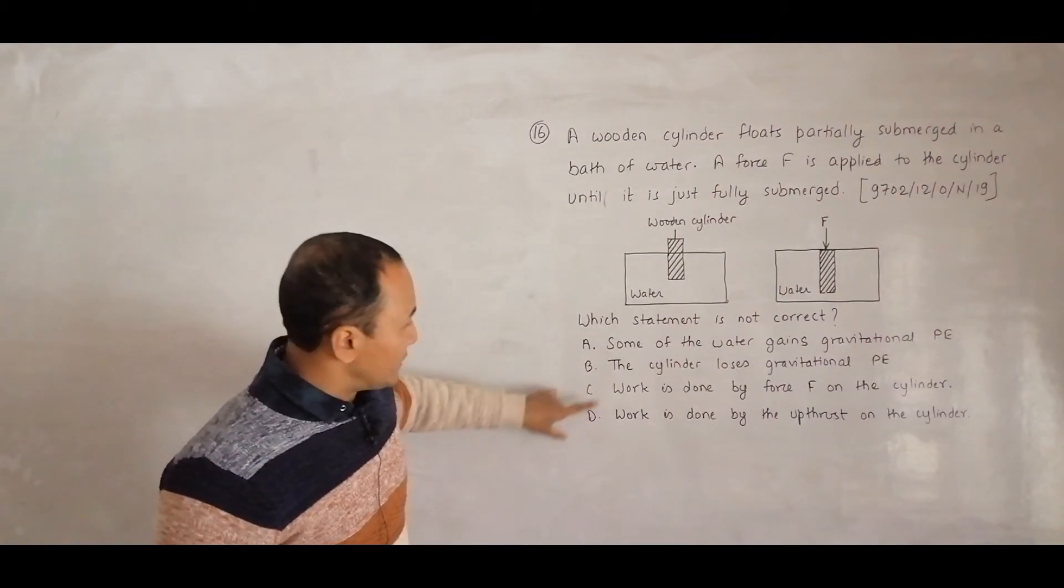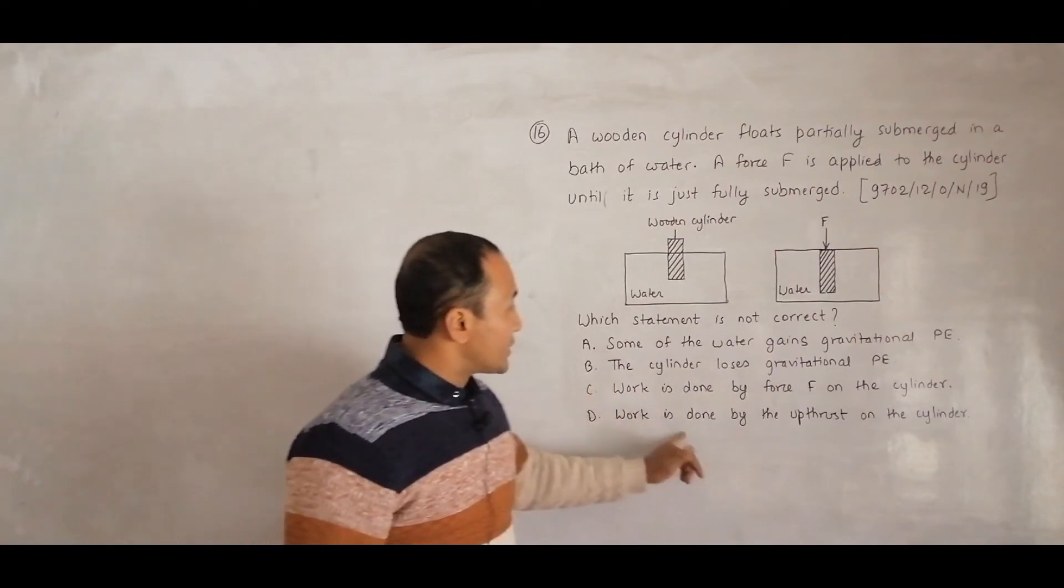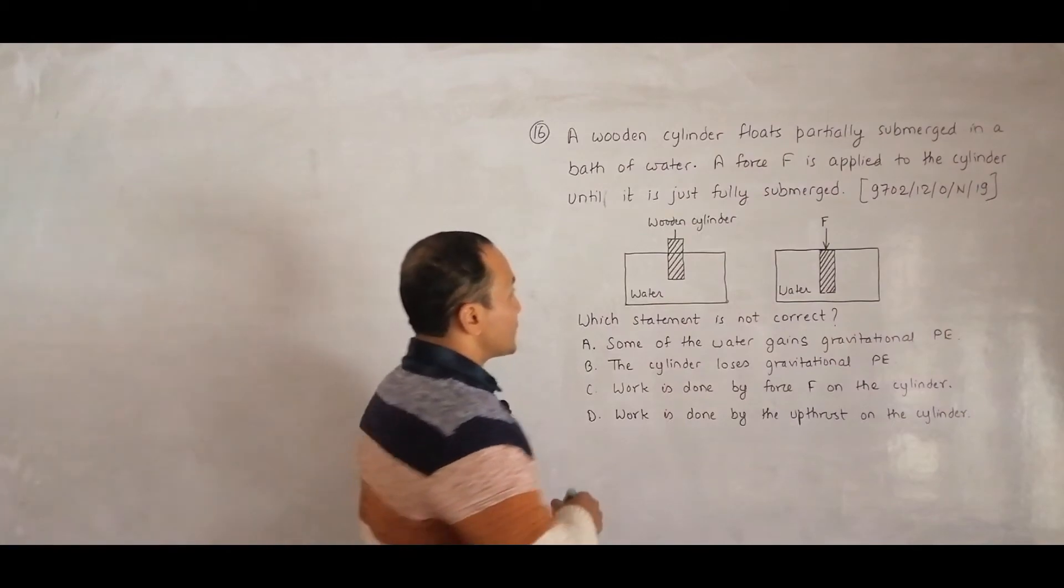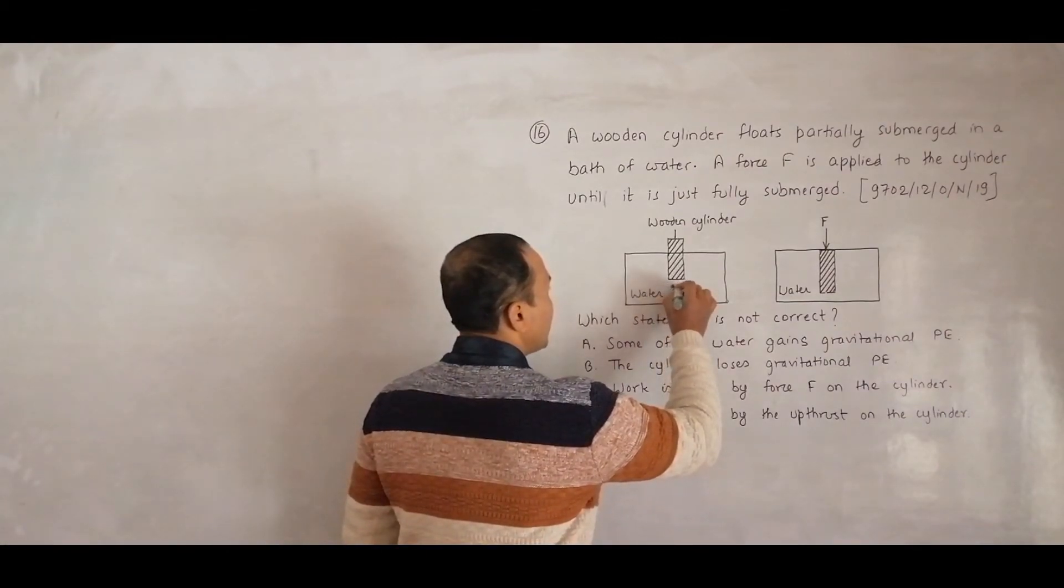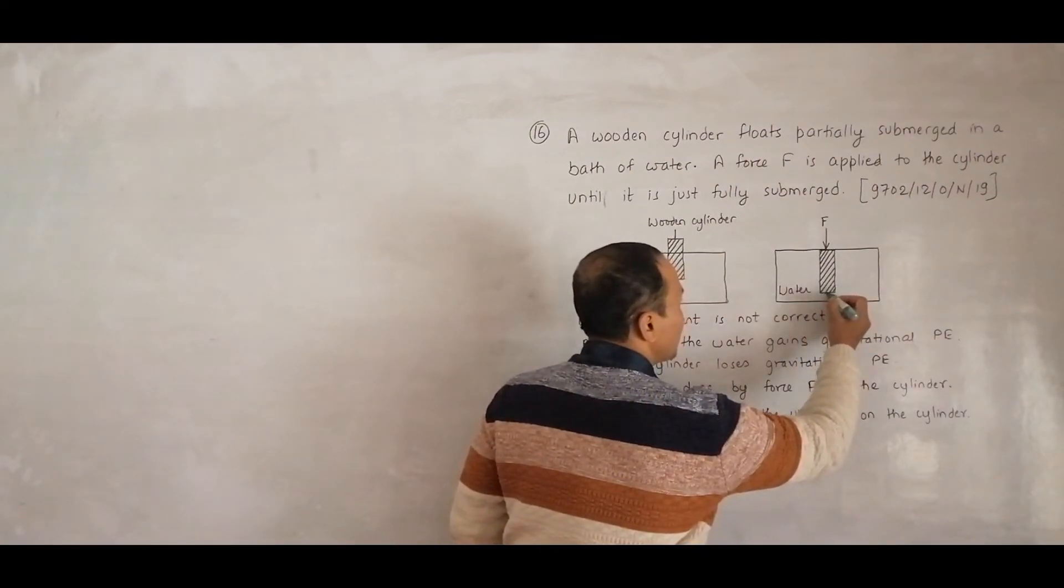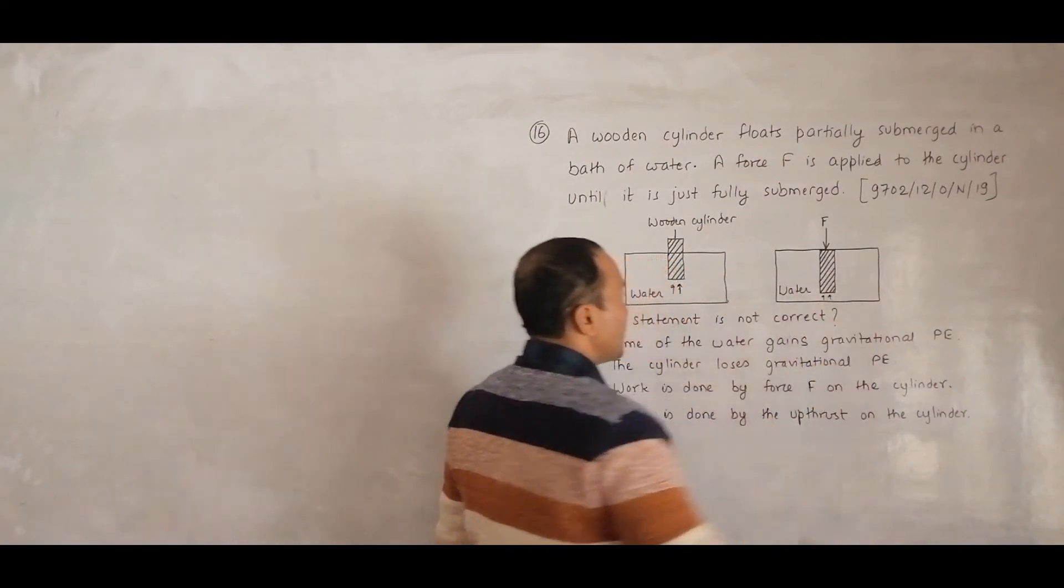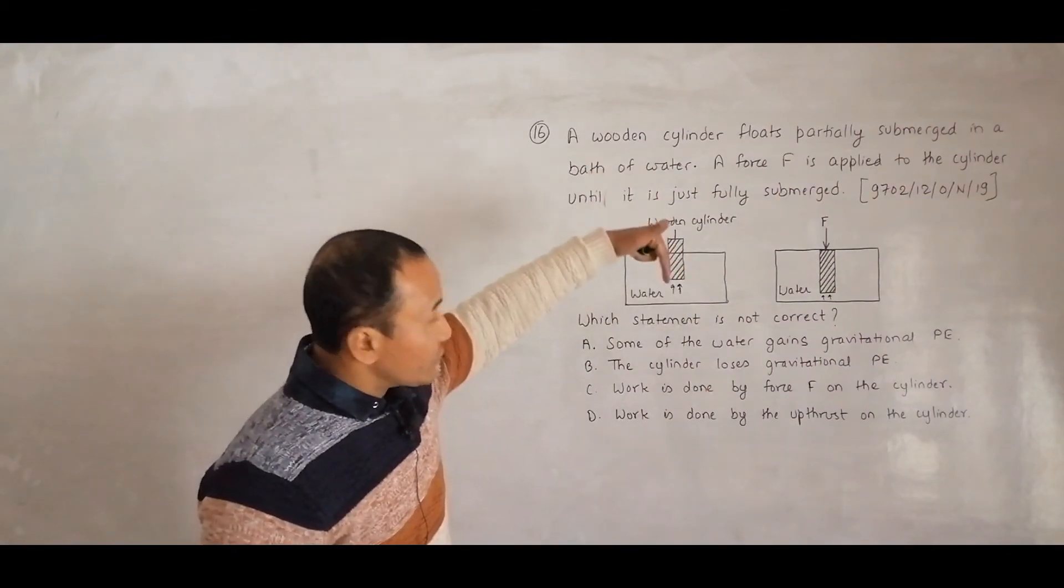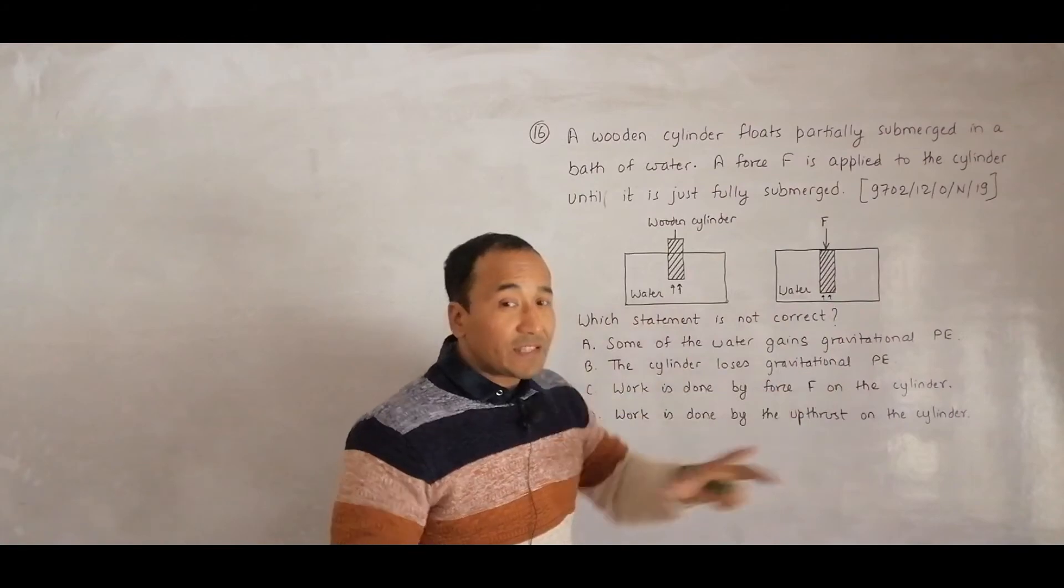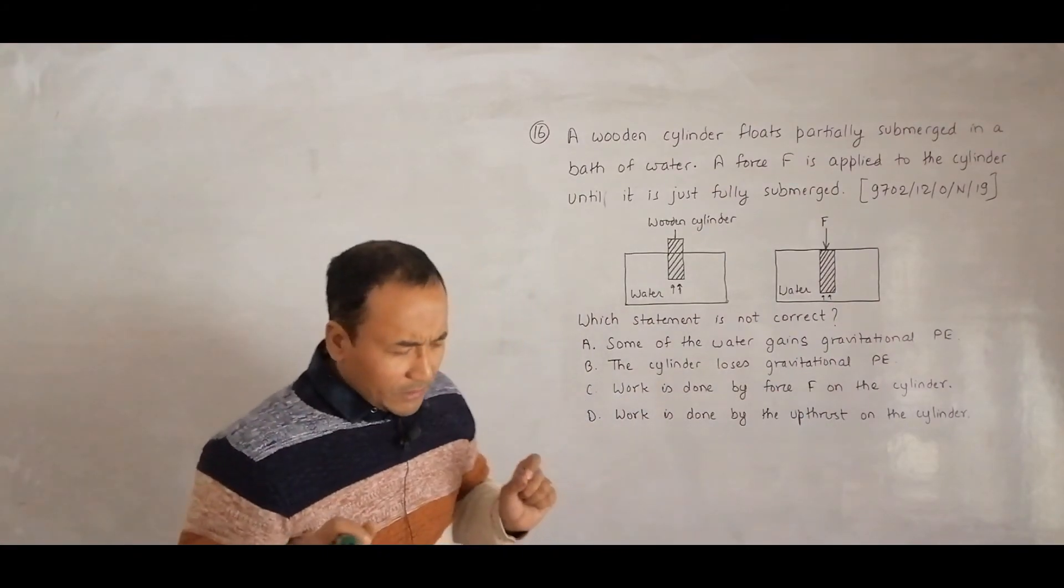Option D: Work is done by the upthrust on the cylinder. Upthrust is the force acting in the upward direction. Here we have upthrust, but right now it is not doing work - the work is being done by this force, not by the upthrust at this moment.